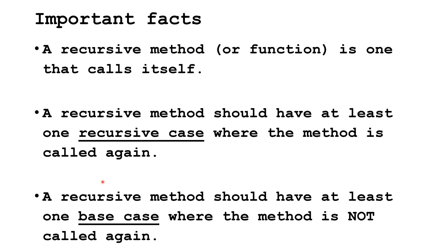In this tutorial, we are going to learn what recursion is in programming. A recursive method or function is one that calls itself. For a recursive method to be useful, it should have two things: first, it should have at least one recursive case where the method is called again, and it should also have at least one base case where the method is not called again.